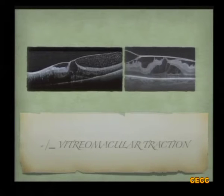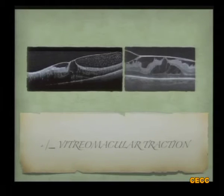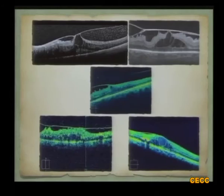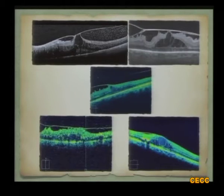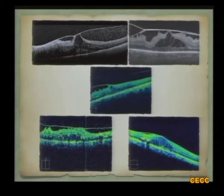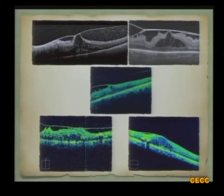Especially for patients undergoing cataract surgery, it is necessary to perform OCT and assess macular status — look for macular edema or interface pathology before surgery. It is also necessary to show each OCT picture to the patient. For example, in the first picture the patient is not going to recover much vision because the external limiting membrane and the ellipsoid zone (the three lines at the bottom of the OCT) are disrupted.